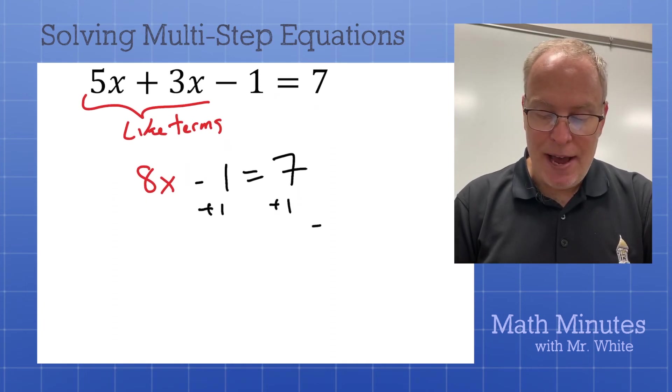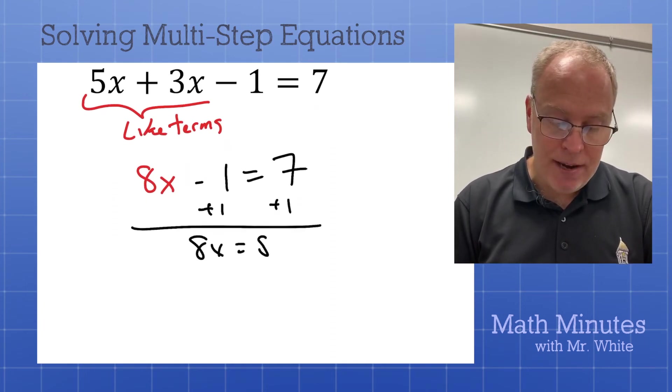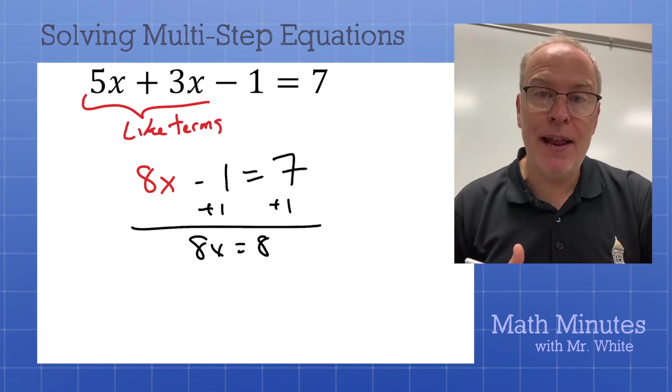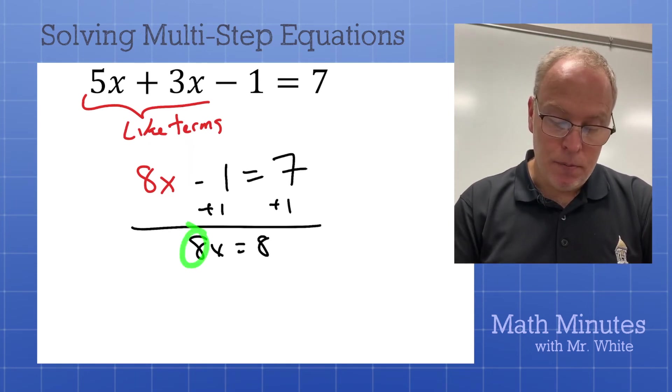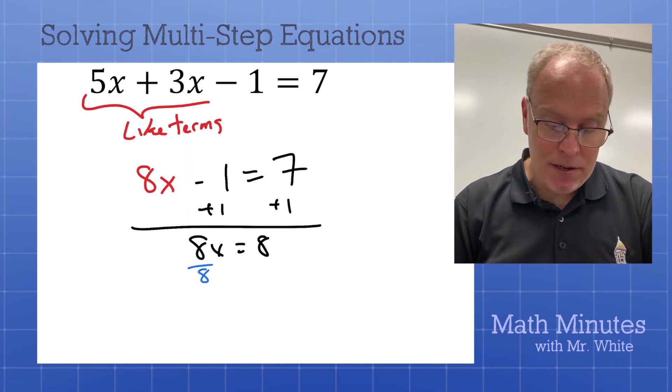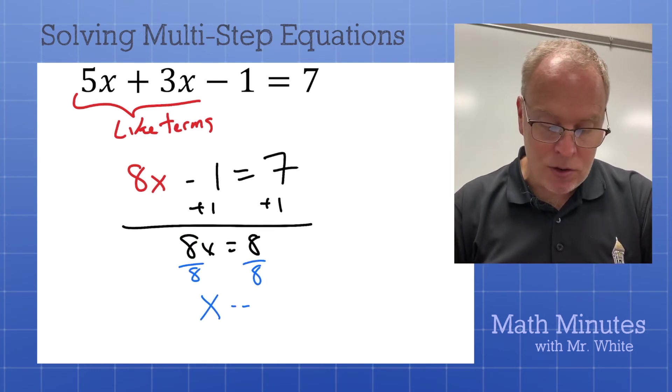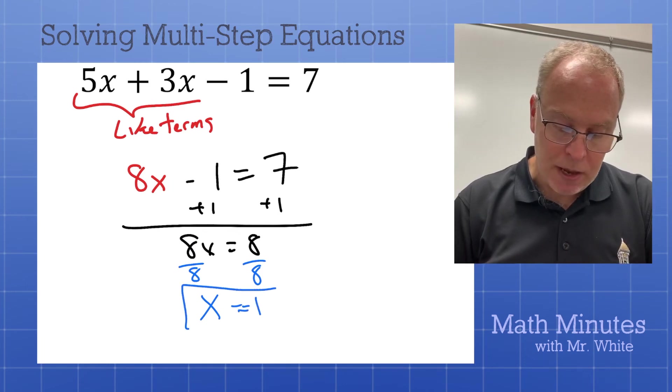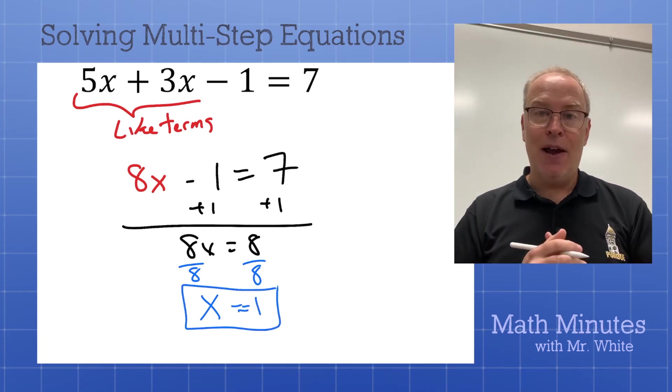And then you just go ahead and get rid of that negative 1. And then you get rid of the 8. All in the right order, of course. So, we're going to add 1 on both sides. 8x equals 8. And then what do we do to get rid of that 8 out front? We're going to divide by 8. Divide by 8. That leaves x all isolated. x equals 1 is the answer. x equals 1.